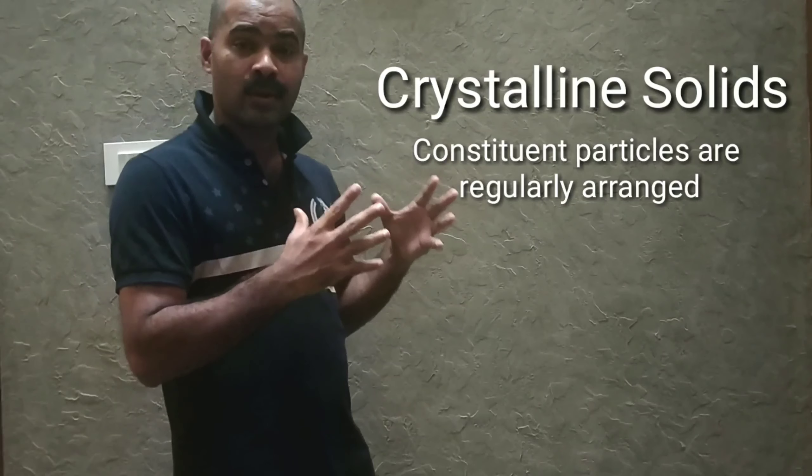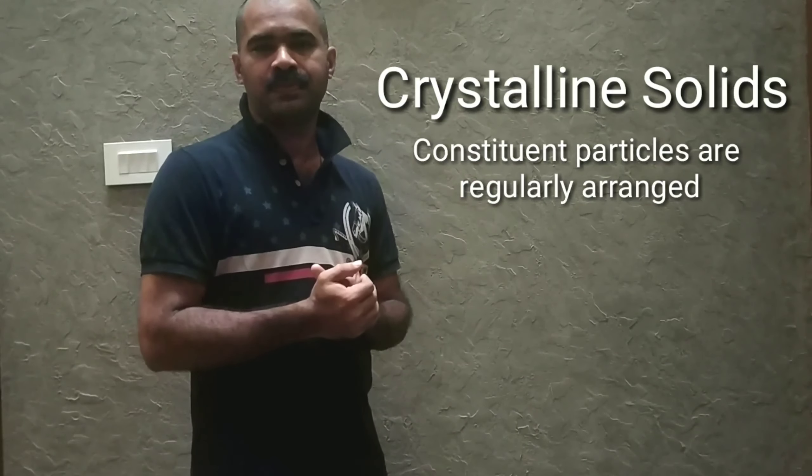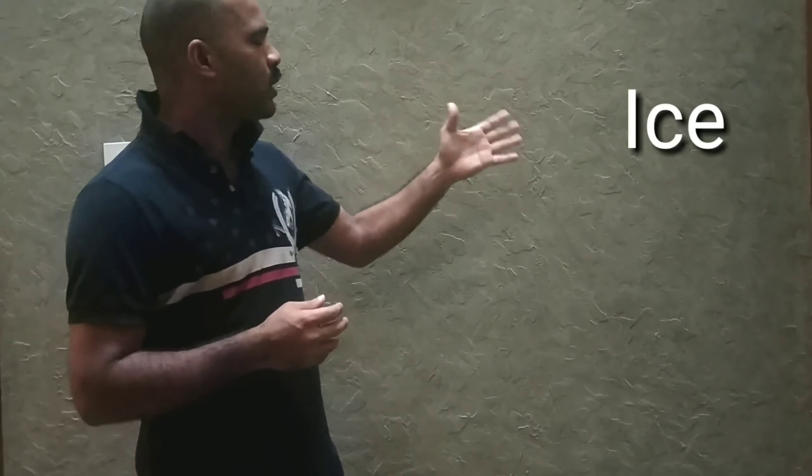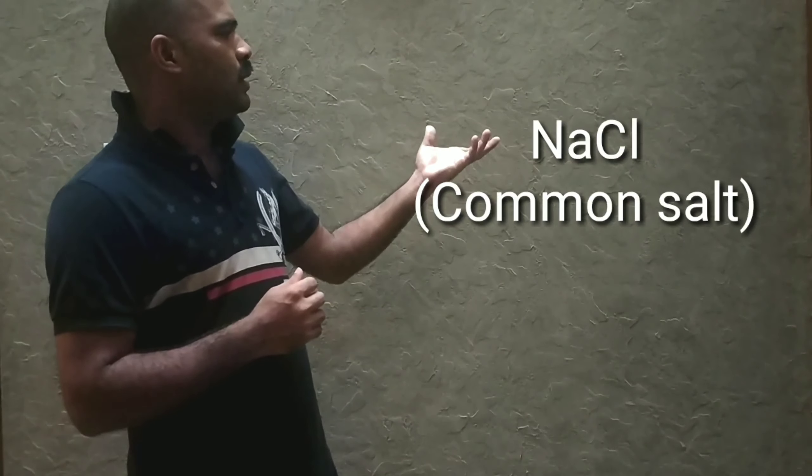There are many properties of amorphous solids which we will discuss later. The second type is crystalline. Crystalline solids are the solids in which the constituent particles are very regularly arranged — there is regularity of arrangement of particles. For example, ice is a solid in which the water molecules are very regularly arranged. Such solids are called crystalline solids.